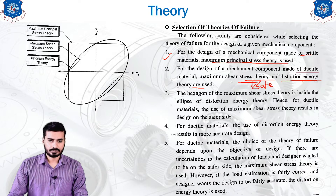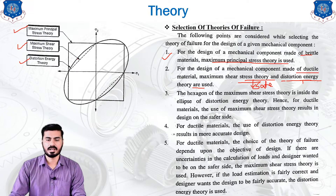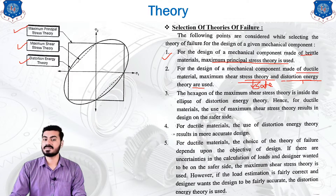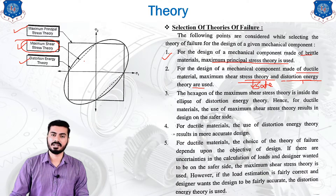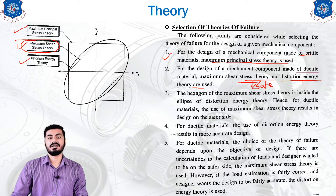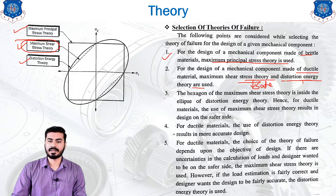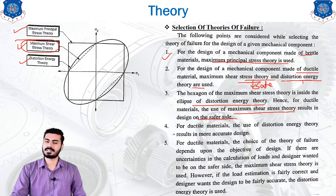As you can see from this diagram, this shows the combination of each safe zone where the maximum principal stress theory, shear stress theory, and distortion energy theory are represented. The maximum safe diagram for ductile material shows that the minimum area is covered by the maximum shear stress theory. The hexagon of the maximum shear stress theory is inside the ellipse of the distortion energy theory, making it the safer theory.